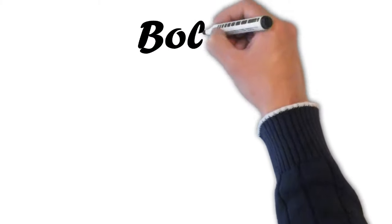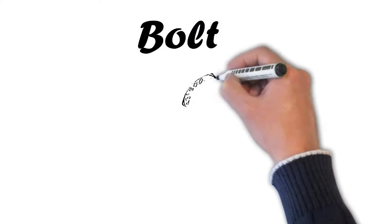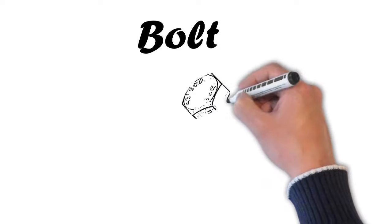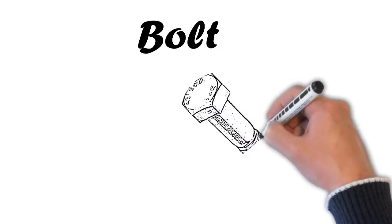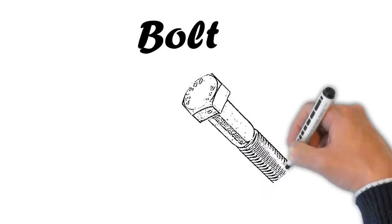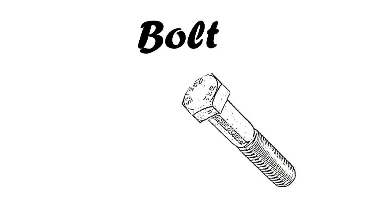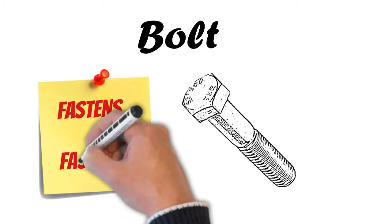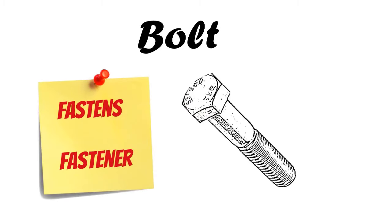We're going to talk about some of the vocabulary that you use with bolts. A bolt fastens pieces together, and because it fastens things it is also known in a group of things called fasteners. A screw is another one, for example.